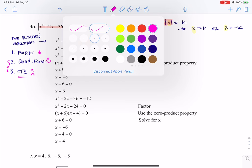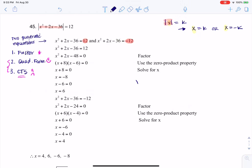But if we look at our two equations as of right now, I'm going to write them over here. I have x squared plus 2x minus 36 equals 12, or x squared plus 2x minus 36 equals negative 12. And since I'm going to try and factor them, I'm going to set them equal to 0. So I will get x squared plus 2x minus 48 equals 0.